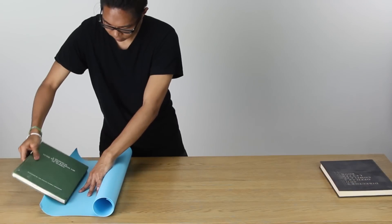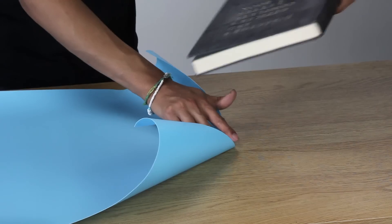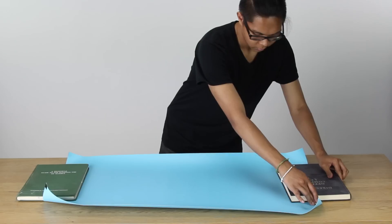The four included backdrops come rolled up. Rolling the backdrops out and weighing them down with books for a couple of hours will help reduce their curl, making them easier to work with.